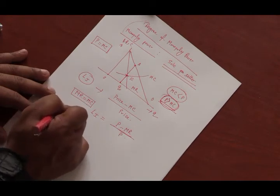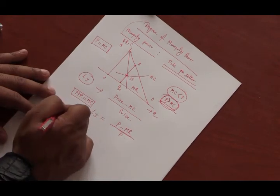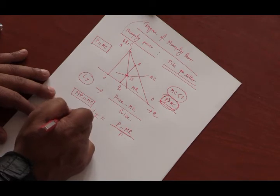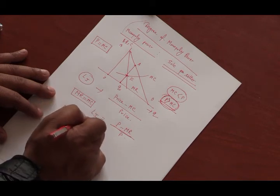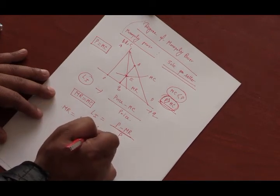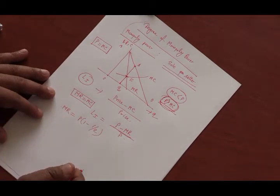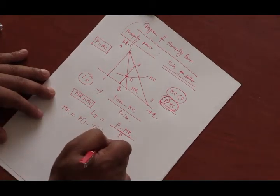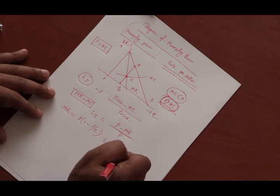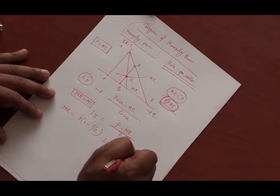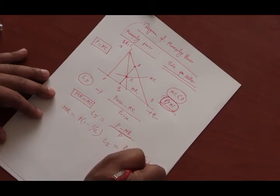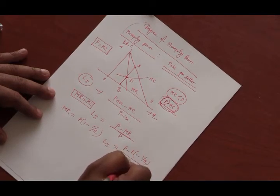Now, we know that the relationship between price and marginal revenue is given like that. MR equals P into 1 minus 1 divided by price elasticity of demand. So, Lerner's index can be written as P minus P into 1 minus 1 divided by E all divided by P.